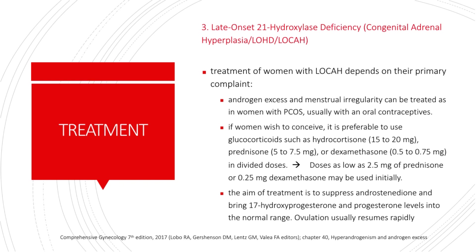For late-onset 21-hydroxylase deficiency, the treatment of women depends on their primary complaint. Androgen excess and menstrual irregularity can be treated as in women with PCOS, usually with oral contraceptives. If women wish to conceive, it is preferable to use glucocorticoids such as hydrocortisone, prednisone, or dexamethasone in divided doses. Doses as low as 2.5 mg of prednisone or 0.25 mg dexamethasone may be used initially. The aim of treatment is to suppress androstenedione and bring 17-OHP and progesterone levels into the normal range, and ovulation usually resumes rapidly once normal levels are achieved.